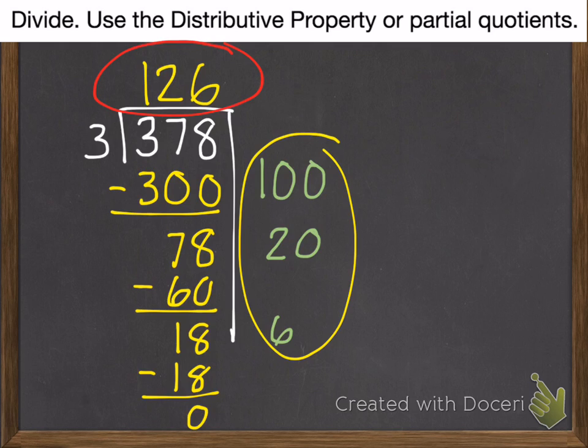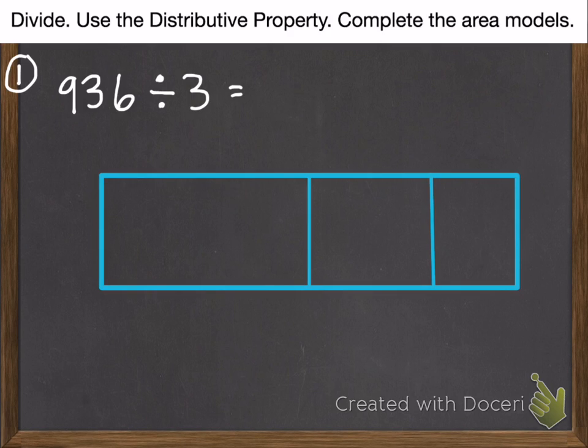Okay, if you feel okay with those two practice problems, we'll move on to the problems we'll check in class. If you're still having a hard time, go back and watch some of those examples again. Here's problem one: divide, use the distributive property, complete the area models. 936 divided by 3. Pause that, and then there's just one more problem.